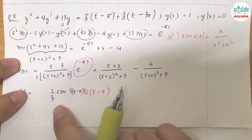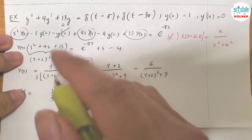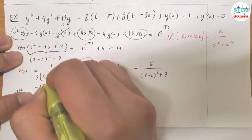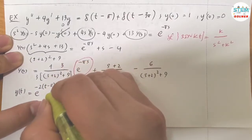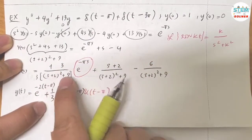We're not done yet for this one, because we also have a shift here. That means that we need to have e to the negative 2T. And again, T minus pi, not just T.